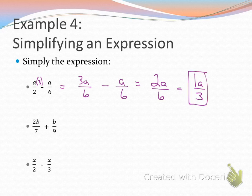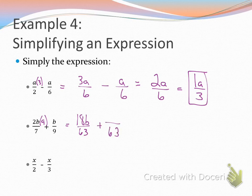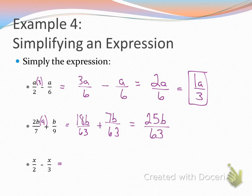Now what about the next one? What's going to be my LCD? 63. It will be 63. Okay, so what is going to be my new numerator? 7 times what equals 63? 9. So 2B times 9, what's 2 times 9? 18, and then I keep my B. So 18B. And then what about my 9? 9 times what is 63? 7. So 7 times B is 7B. What's 18B plus 7B? 25B over 63, and I'm done. Now I want you to do the last one. LCD is 6. 3X minus 2X. X over 6. We got it right. X over 6. Awesome, guys. Good job.